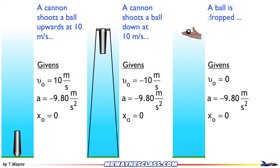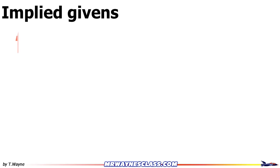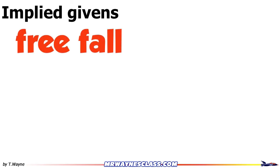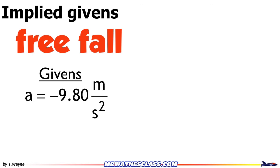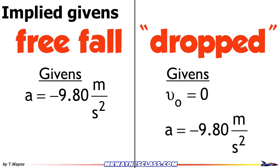So what are the takeaways? Whenever a problem says 'dropped,' you always have these implied givens — the problem won't tell you the initial velocity is zero or that the acceleration is negative 9.8 meters per second squared, but when it says dropped, you know these values are true. With free fall, if an object is under the influence of gravity, the acceleration is always negative 9.8 meters per second squared. And if the word 'dropped' is used, you also know the initial velocity is zero.